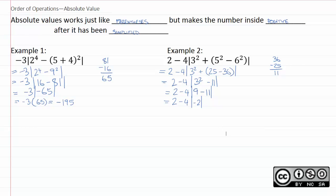And again, 2 minus 4 times negative 2. The absolute value means the inside becomes a positive. So, this becomes 2 minus 4 times 2.